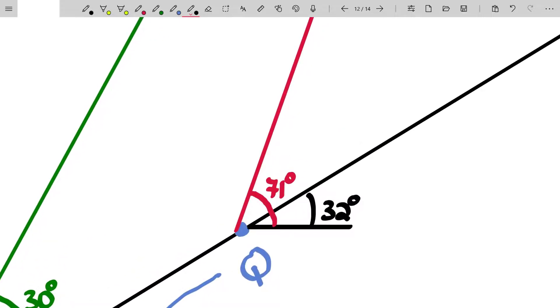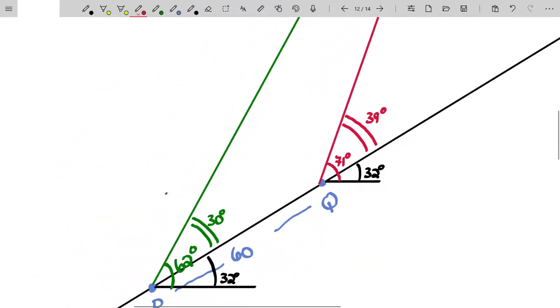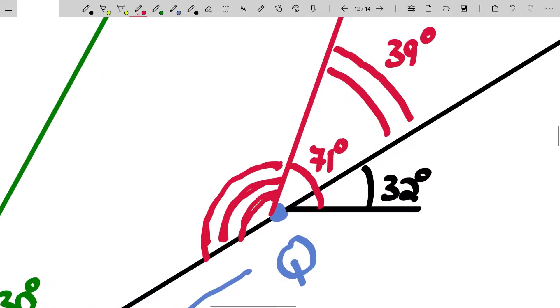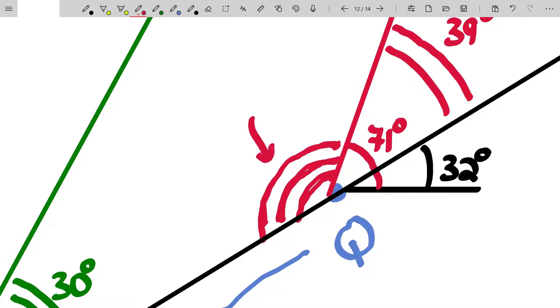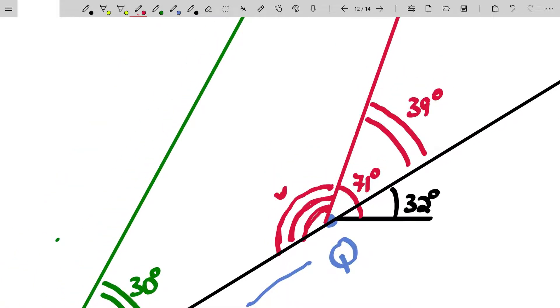Also, we were told this angle right here is 32 degrees. And therefore, the remaining piece of this angle is 71 minus 32, which is 39 degrees. So 39 degrees. Now, if that's 39 degrees, you can see that you can find this angle right here. Because 39 degrees and this angle right here are supplementary. They're part of a straight angle. Then the remaining angle is 180 minus 39 and that's 141 degrees.